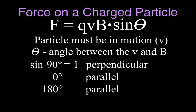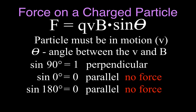When the angle is zero, the particle is moving in the same direction as the magnetic field, and when it's 180, it's moving in the opposite direction. But in both cases it's moving parallel to the magnetic field. If we take the sine of zero, we get zero, and if you take the sine of 180, you also get zero. That means when the particle is moving parallel to the magnetic field the particle feels no force — it will continue moving in the same direction because it doesn't feel any force.